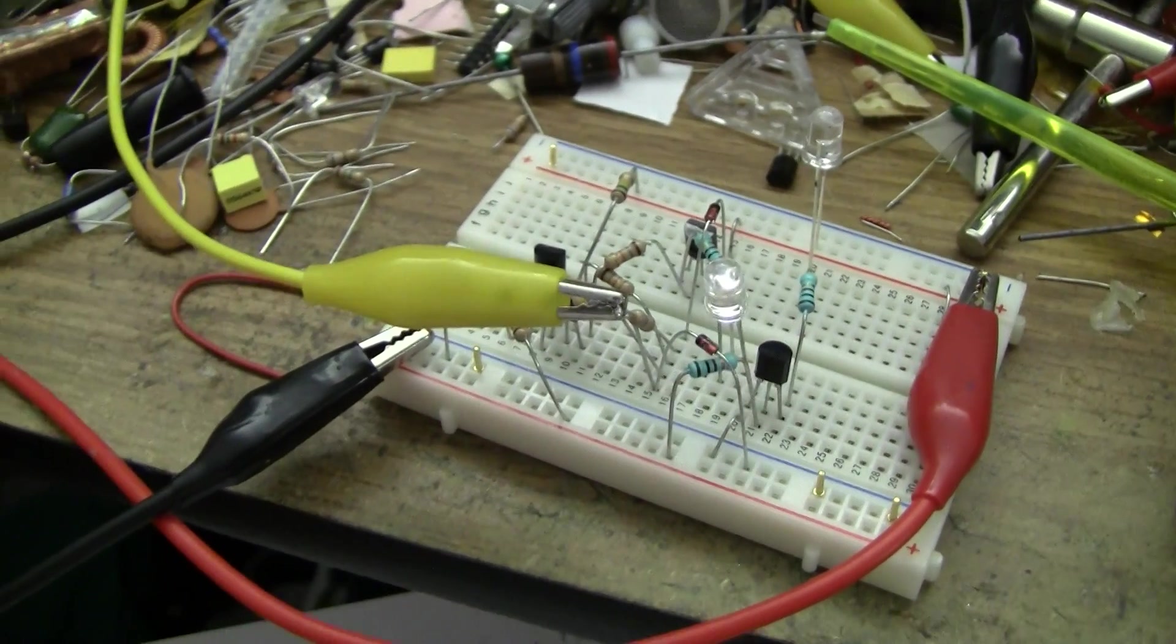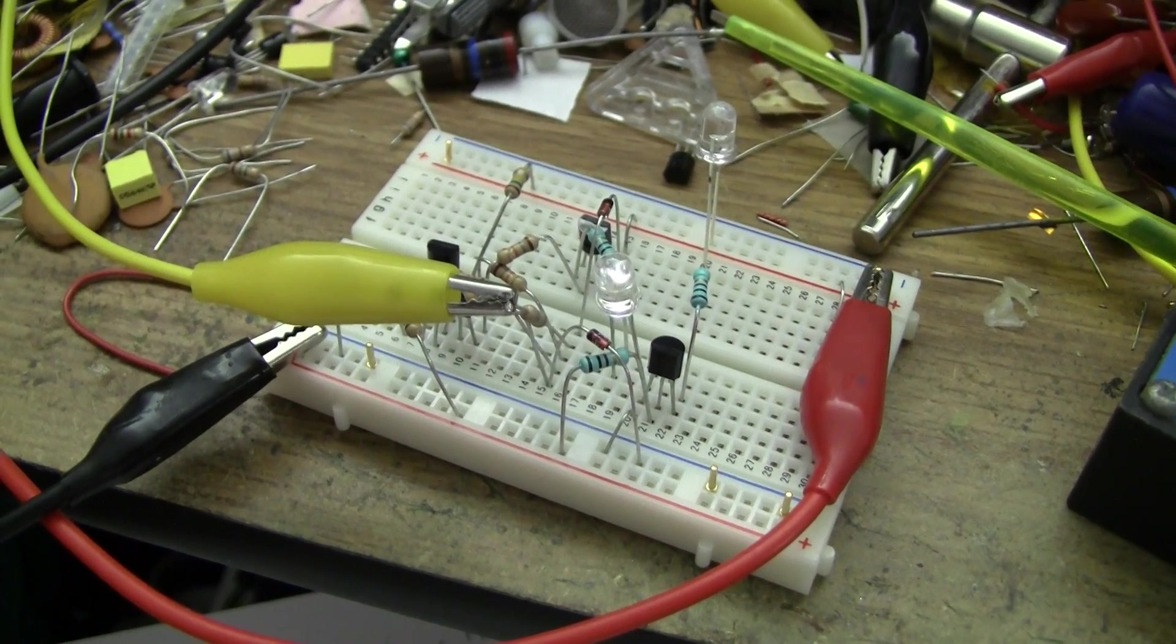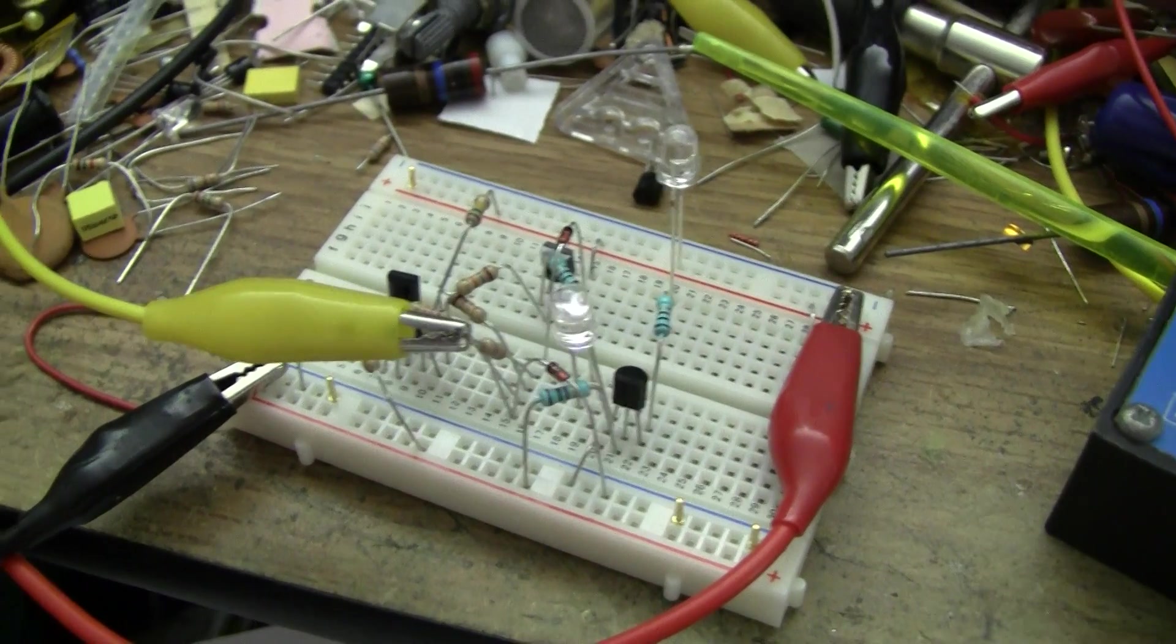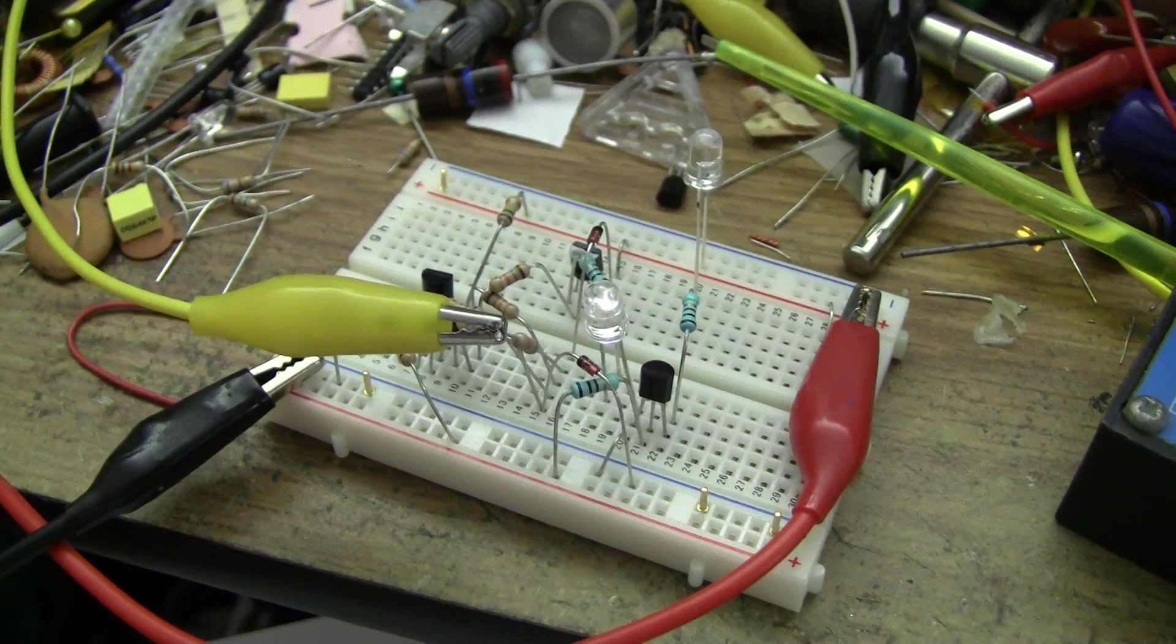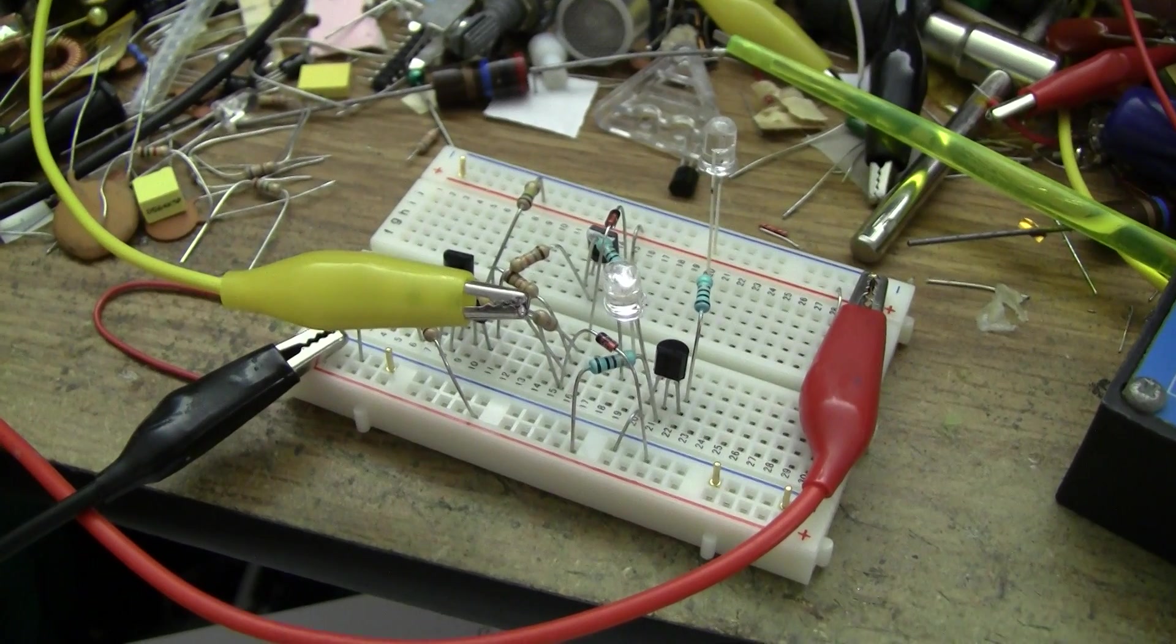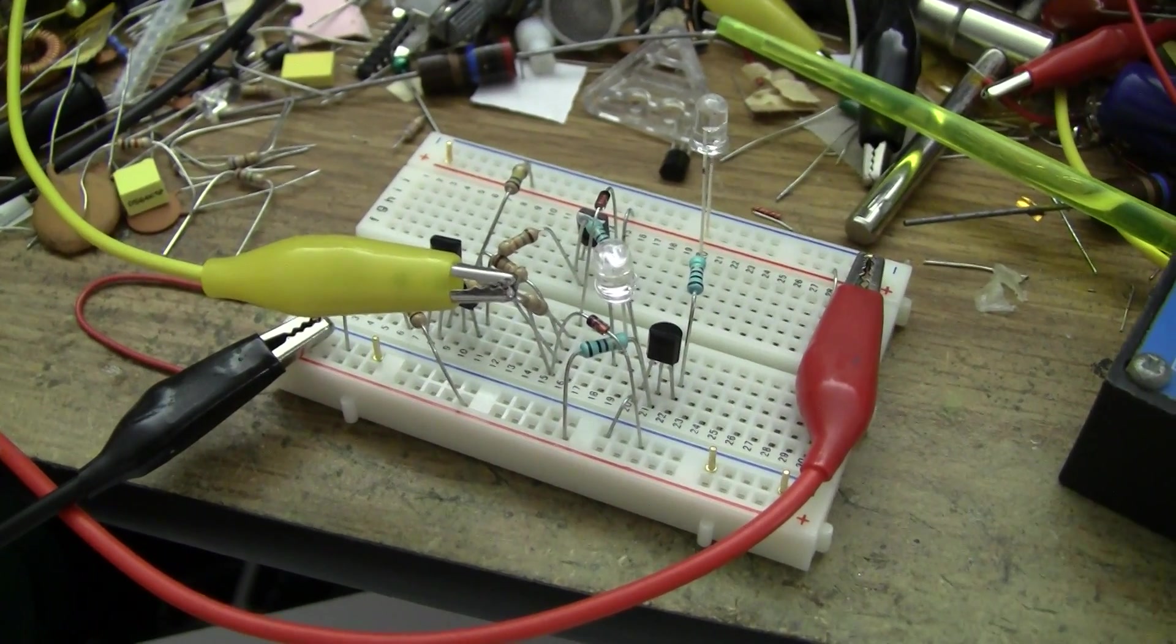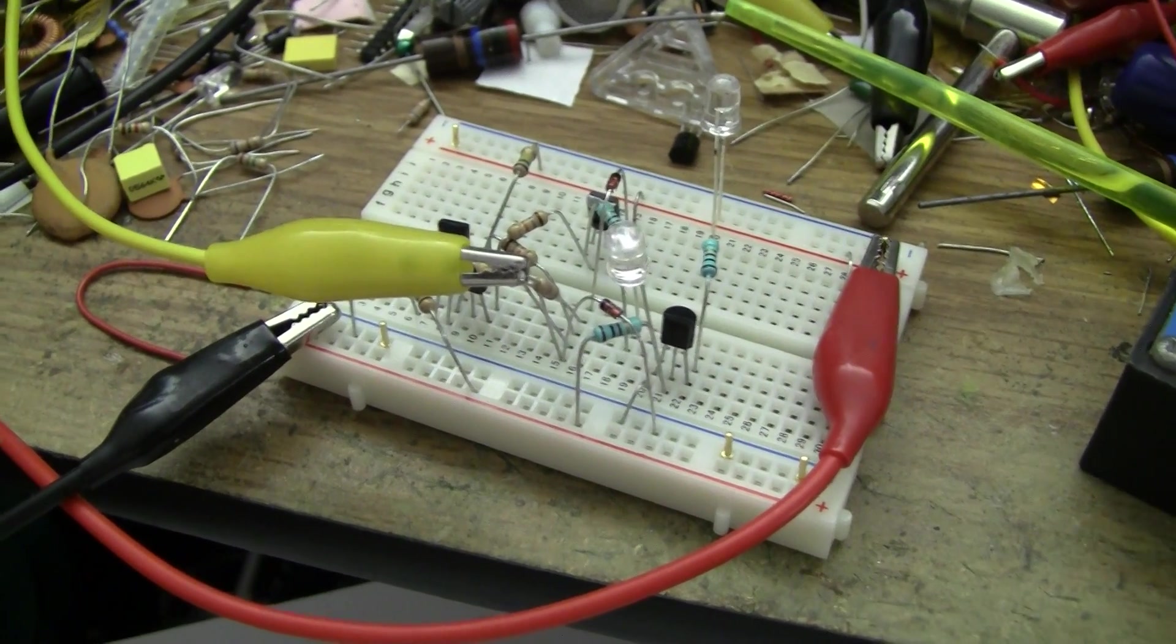Quiescent current's about 11 microamps, and it's about 1 milliamp, maybe a little bit less than that actually, when the LEDs are lit. So even with tiny batteries, it'll probably last pretty much forever. With a lithium cell, I think I'll probably be replacing it every year or something.